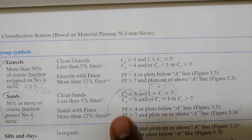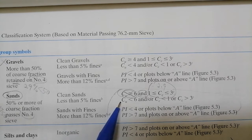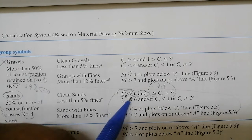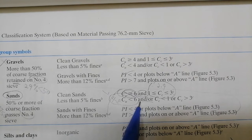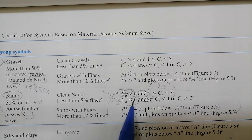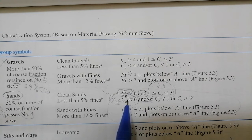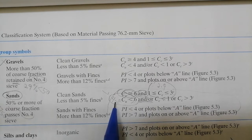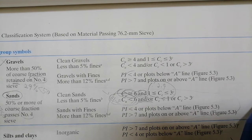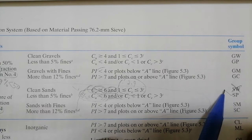Moving to the second criteria: our Cu is 4.8, which is less than 6, so we meet this condition. Importantly, this criterion uses 'or', meaning satisfying just one condition is enough. Since we comply with this, we can classify our soil as SP.